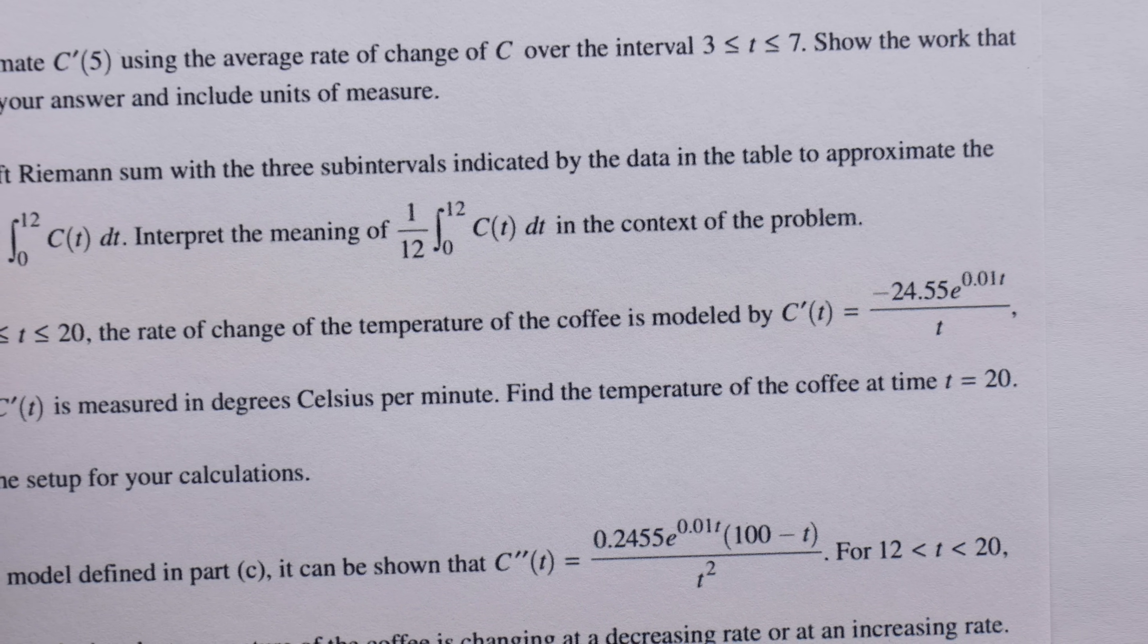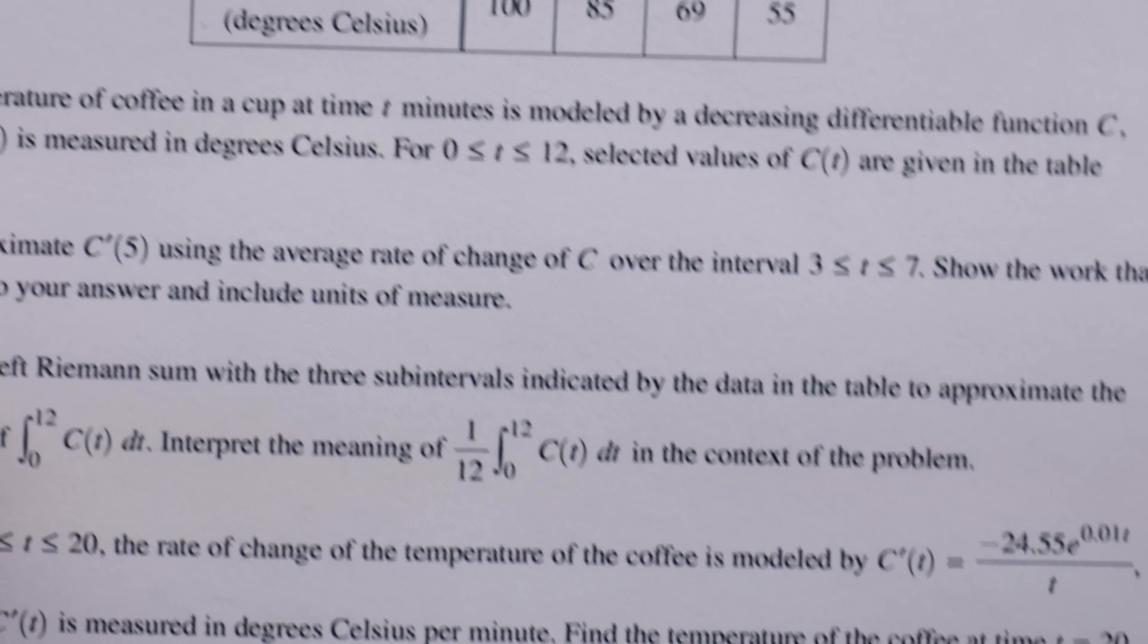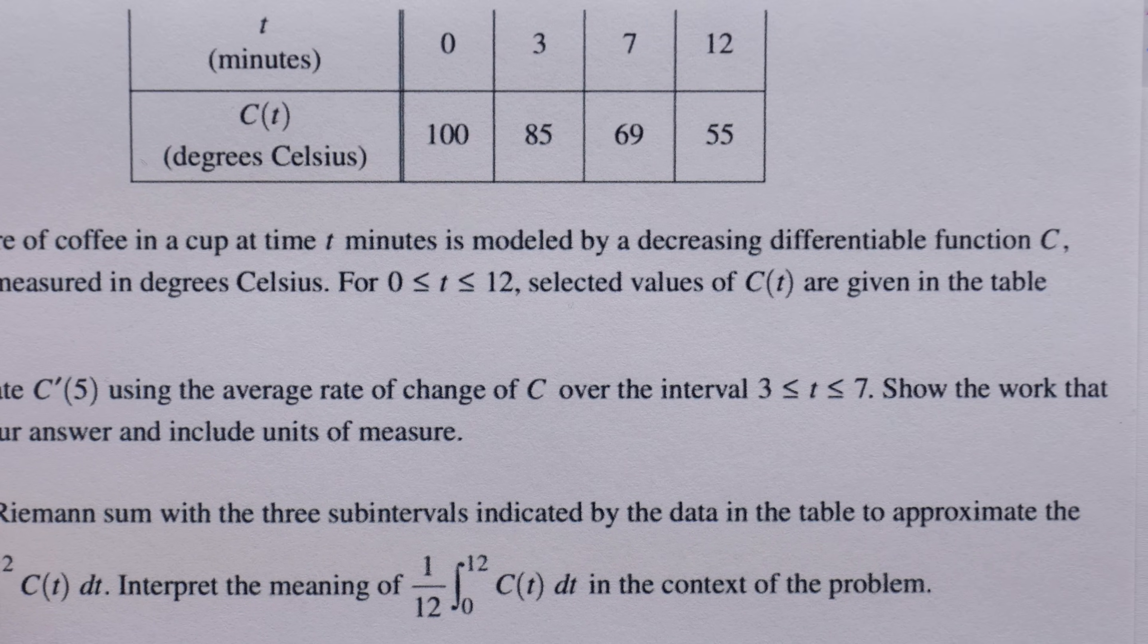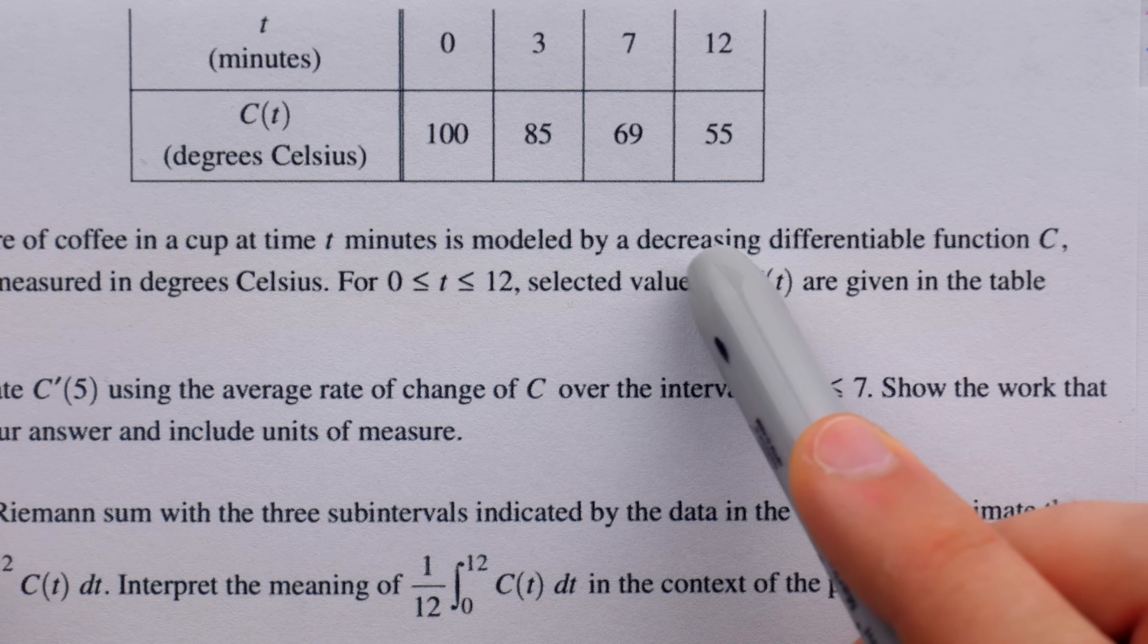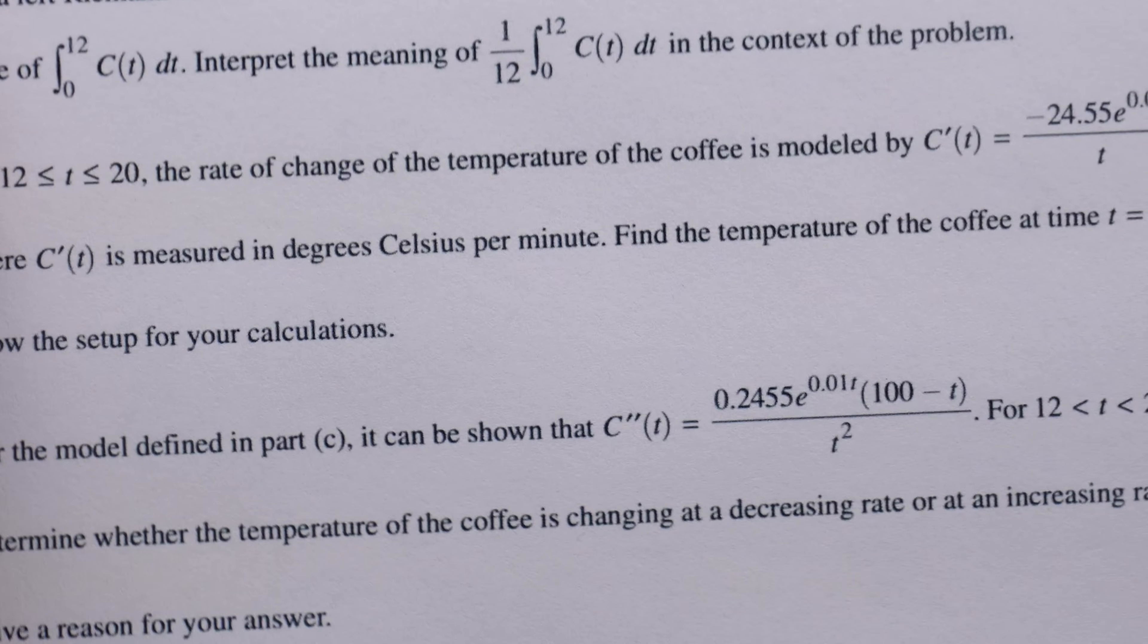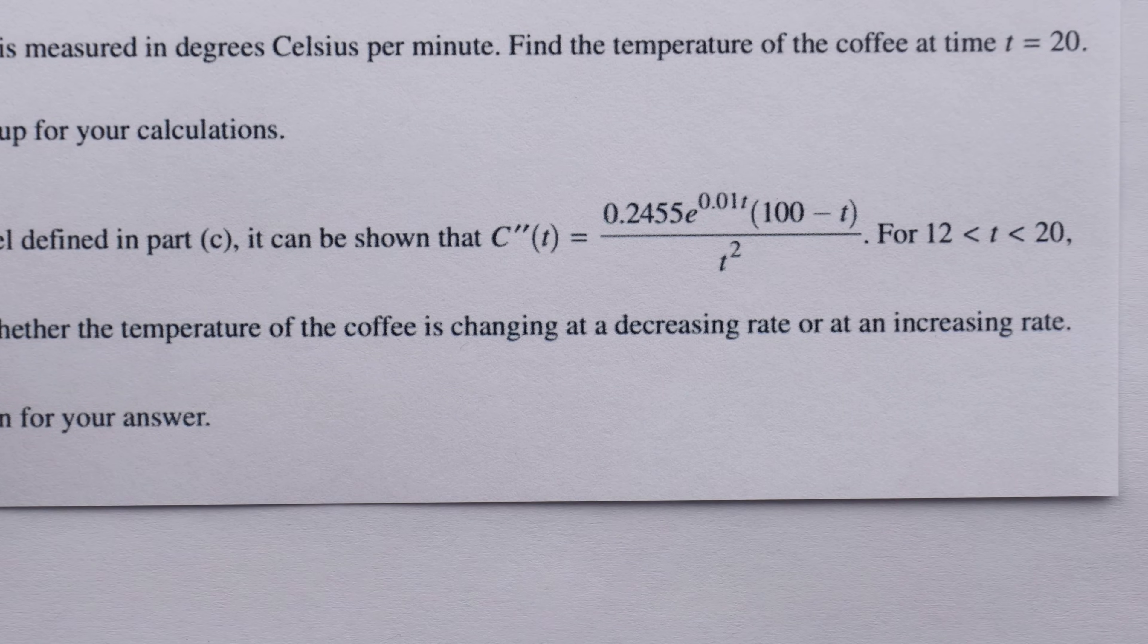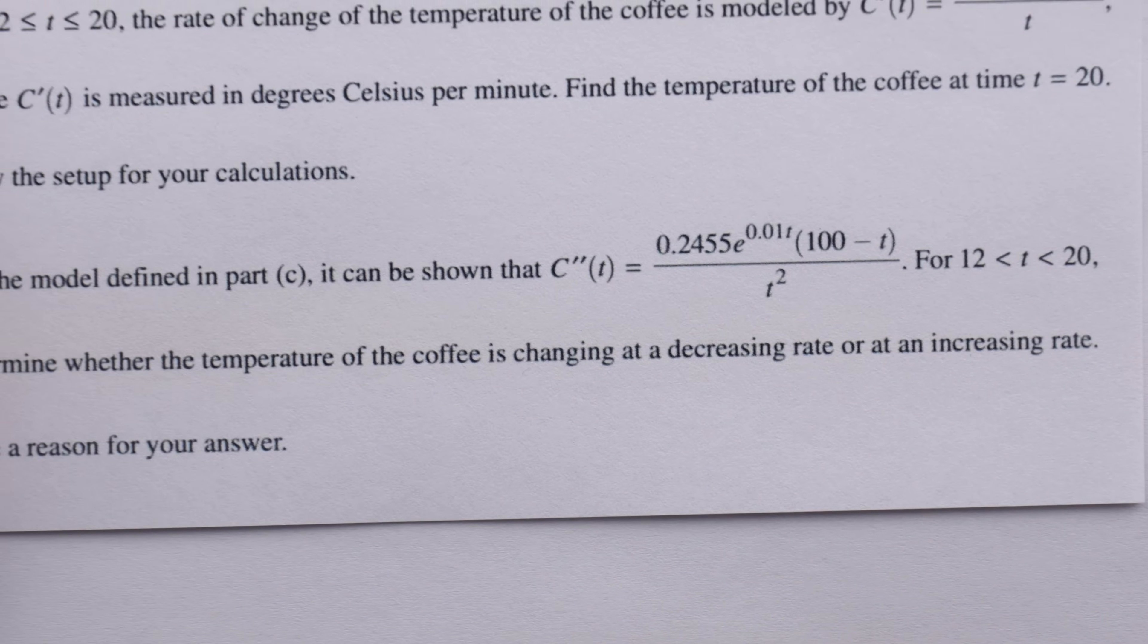because this tells us how the temperature is changing. In fact, if you misread the question in this way, then you don't even have to reference this given derivative, because the problem tells us at the start that the temperature is decreasing. So some students said since the temperature is decreasing, well, the temperature of the coffee is changing at a decreasing rate. The issue with that interpretation is that in Part D, there are in fact two rates of change which have been bundled into a very small amount of language.